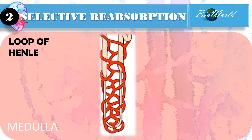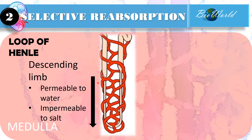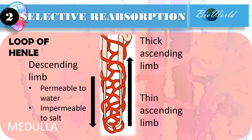The loop of Henle is located in the medulla of the kidney. It can be divided into three parts. The first part is the descending limb. It is permeable to water but impermeable to salt. This means that the water in the filtrate that flows along the descending limb can diffuse out into the vasa recta, but the salt cannot. On the other side, we have the ascending limbs.